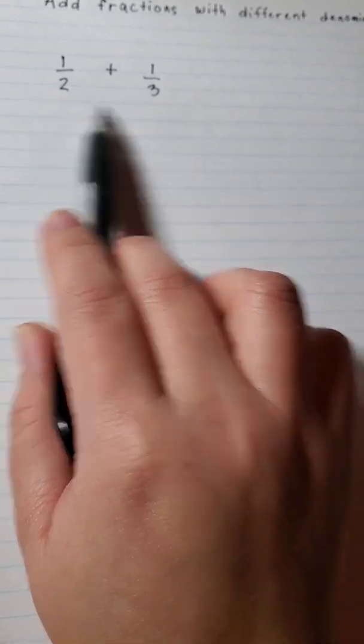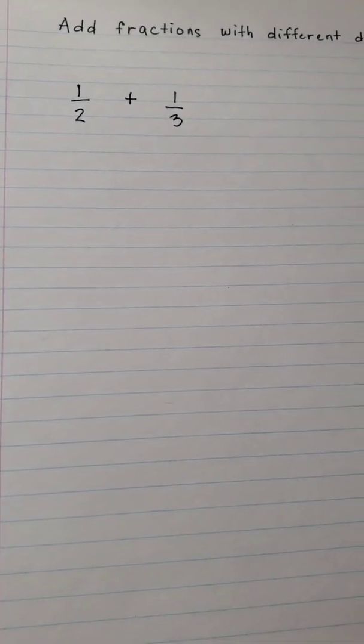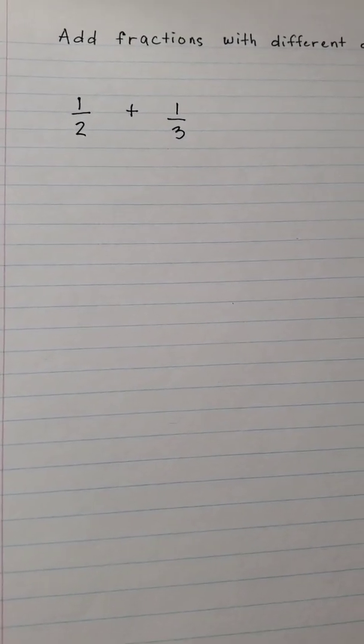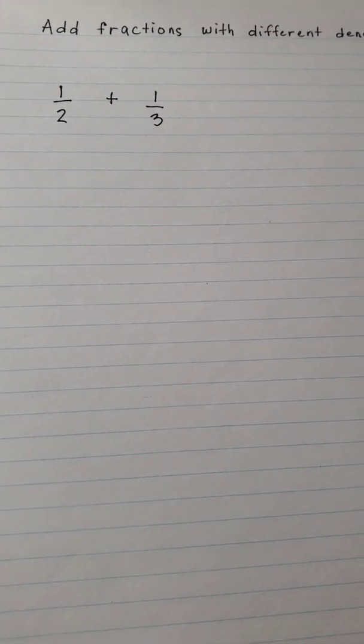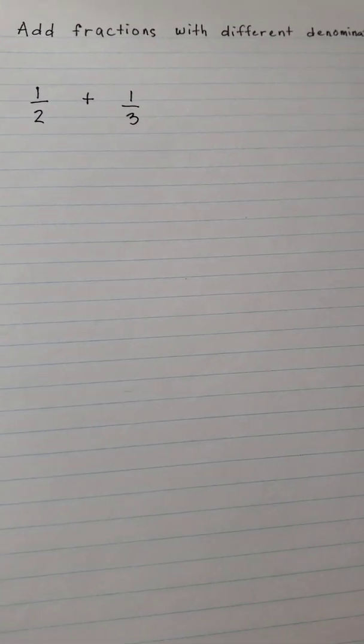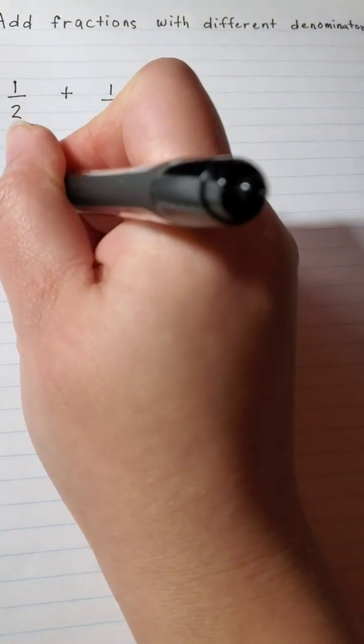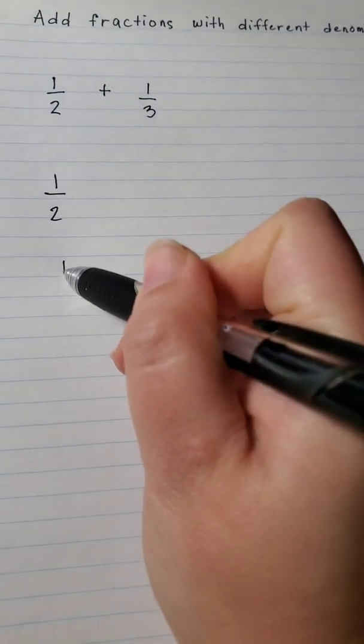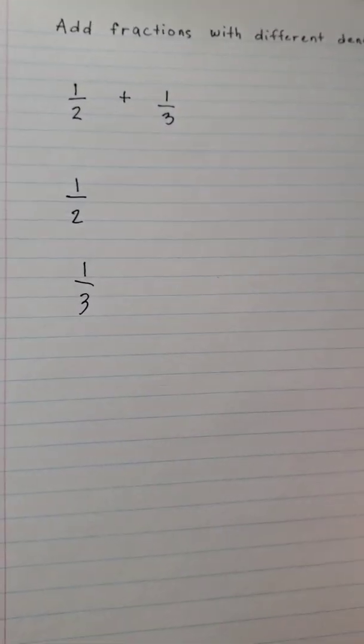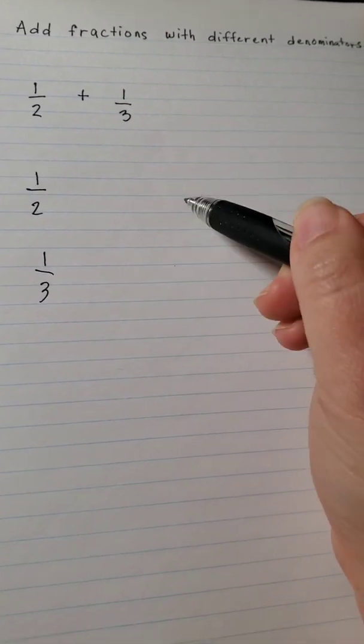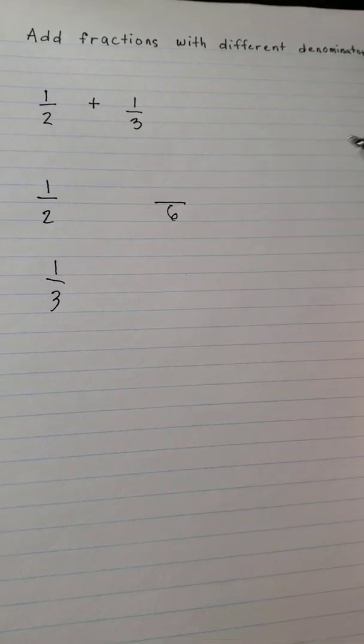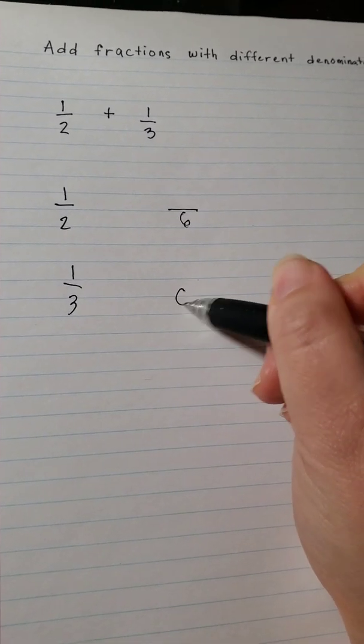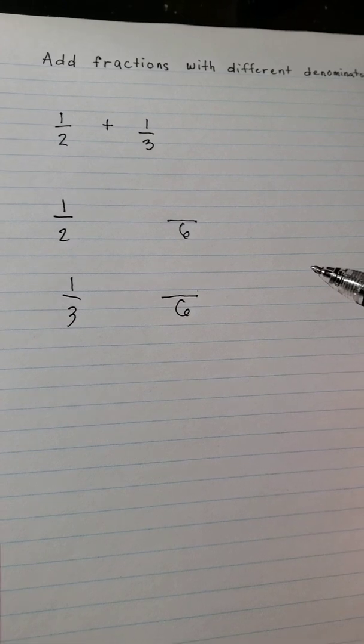We're gonna move on to 4. 4 cannot divide by 3. How about 5? 5 cannot divide 2 or 3. So we'll try 6. So 1 half, 1 third here. We're gonna try 6. So 6 can divide, so you write down your common denominator.